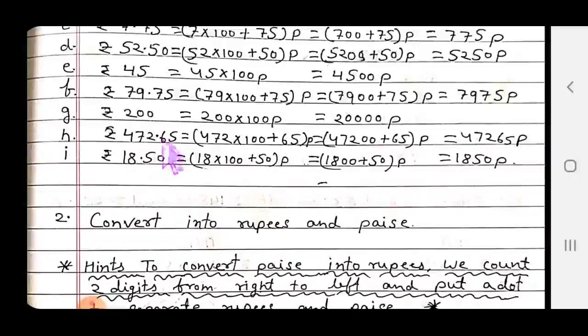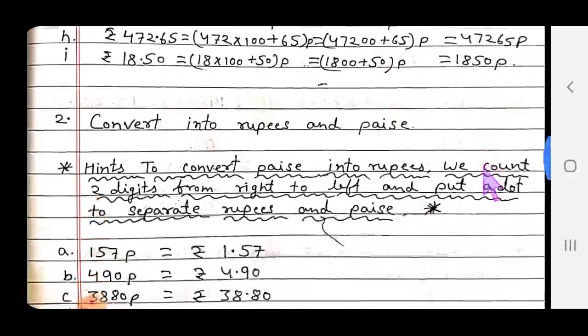Question h: 472 rupees 65 paise. Multiply 472 by 100, then add 65 paise, you get 47,265 paise. Question i: 18 rupees 50 paise. Multiply 18 by 100, plus 50 paise equals 1850 paise.